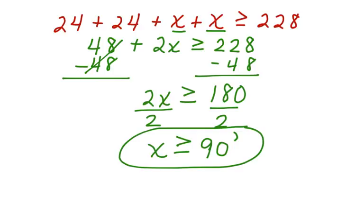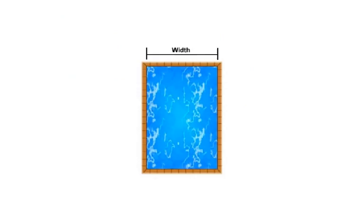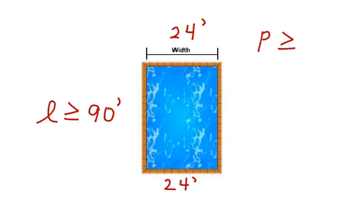Now let's go back and look at the diagram of the pool once again. Here's a different diagram, but it still shows a rectangular pool. The width is 24 feet. We can say that if the length is at least 90 feet, then the perimeter will also be at least 228 feet. This is our solution, and our work is complete.